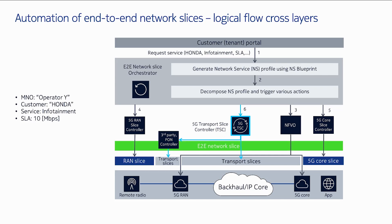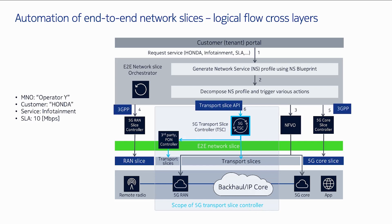At the end, the green slice is created and can be used by the Honda customer for the specific service type mentioned. The scope of this presentation is the transport slice controller, and I will show in the demo how we can create these transport slices. Interfaces 4 and 5 are defined by various technical reports from 3GPP, and Nokia is working with various SDOs to make interface 6 also a standard — we call it the transport slice connectivity API.